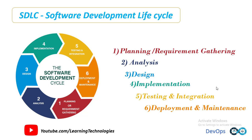Next is deployment and maintenance. After successfully testing and integrating the product, it is delivered or deployed to the customer. Deployment is done by deployment or implementation engineers. Once customers start using the system, actual problems come up and need to be solved from time to time. Fixing issues found by the customer is the maintenance phase. 100% testing is not possible because the way testers test the product differs from how customers use it. Maintenance should be done as per the SLAs, or service level agreements.